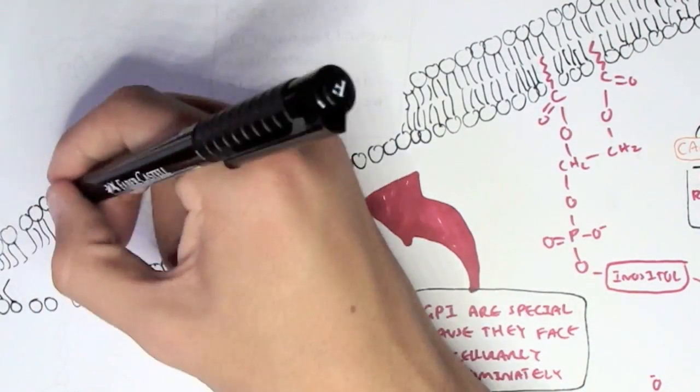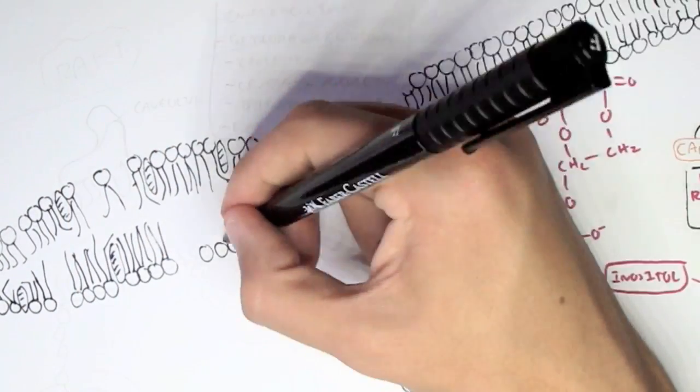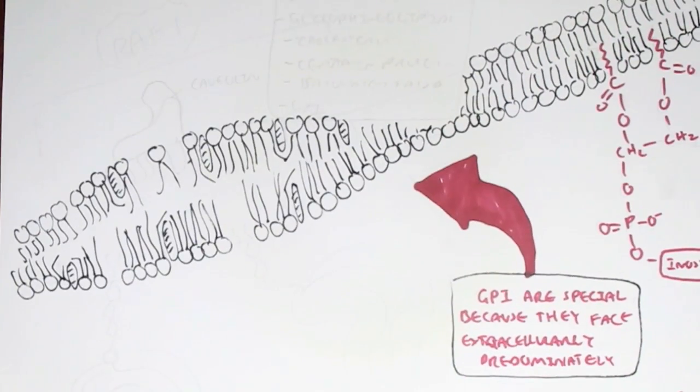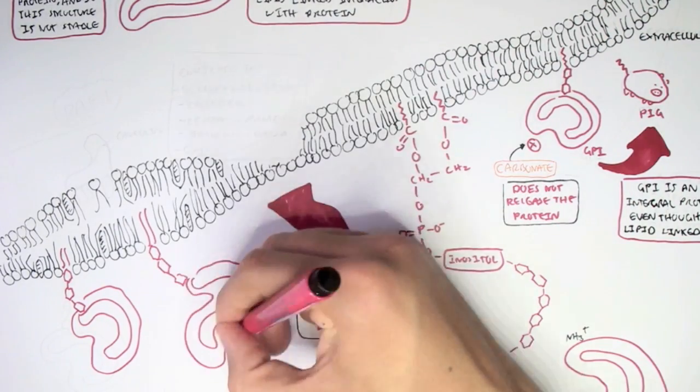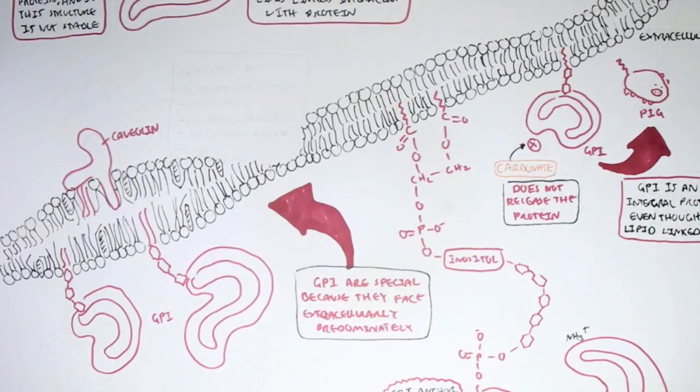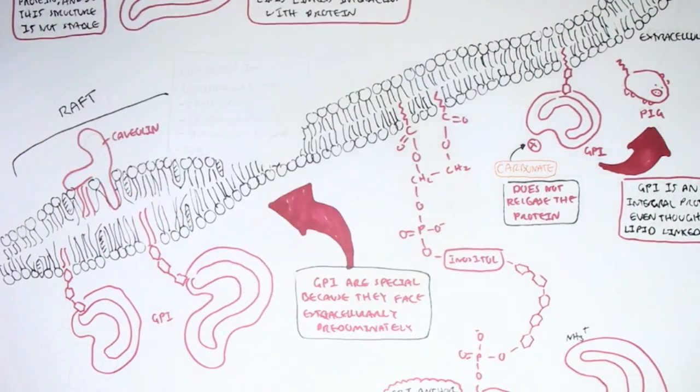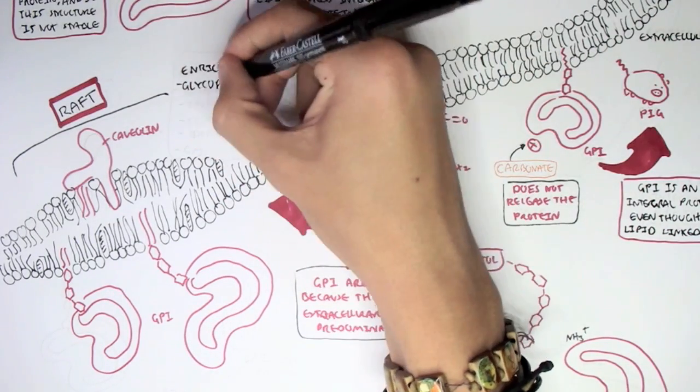And so what this actually is good for is that it can be used for signaling. And GPI are mostly found in locations called rafts, special domains which are enriched in many types of proteins and lipids, such as they are enriched in glycosphingolipids, they are enriched in cholesterol, these rafts.